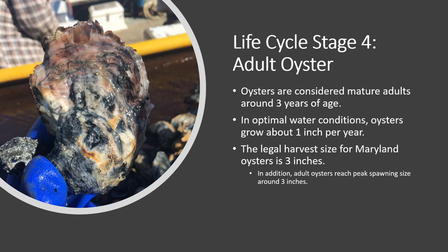Oysters face many issues throughout their lives, whether it's predation, over-harvesting, parasitism, disease, or pollution. These issues have drastically impacted the oyster population in the coastal bays and have made it extremely difficult to create a self-sustaining oyster population. The Maryland Coastal Bays Program is working with numerous partners to re-establish the oyster population through restoration, scientific monitoring, and volunteer programs. We hope to one day have a self-sustaining oyster reef in the coastal bays.